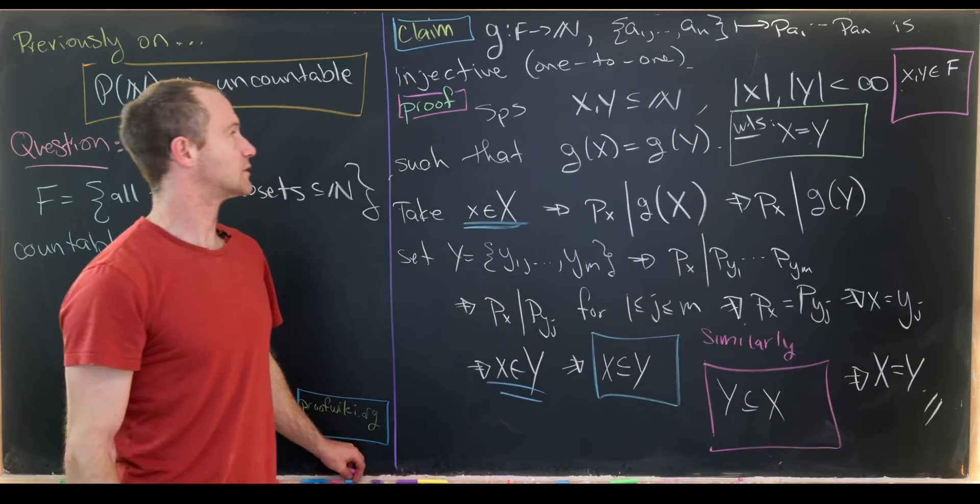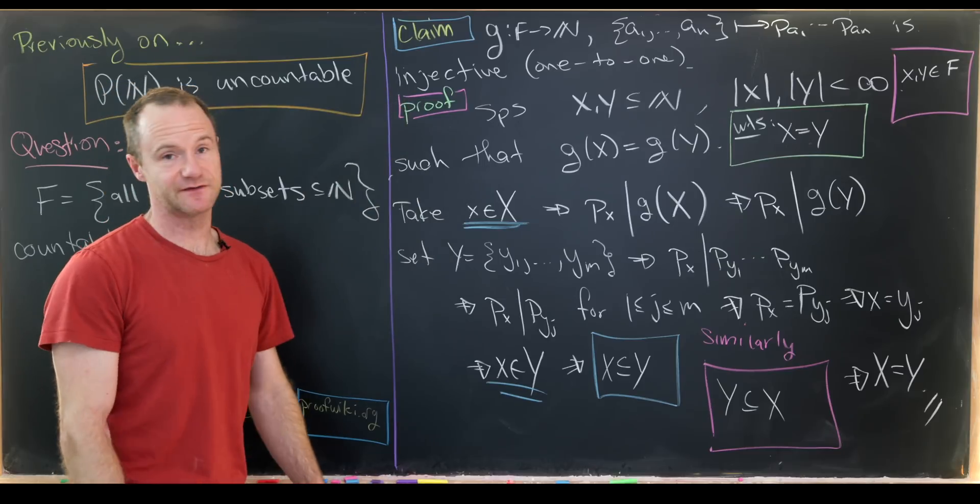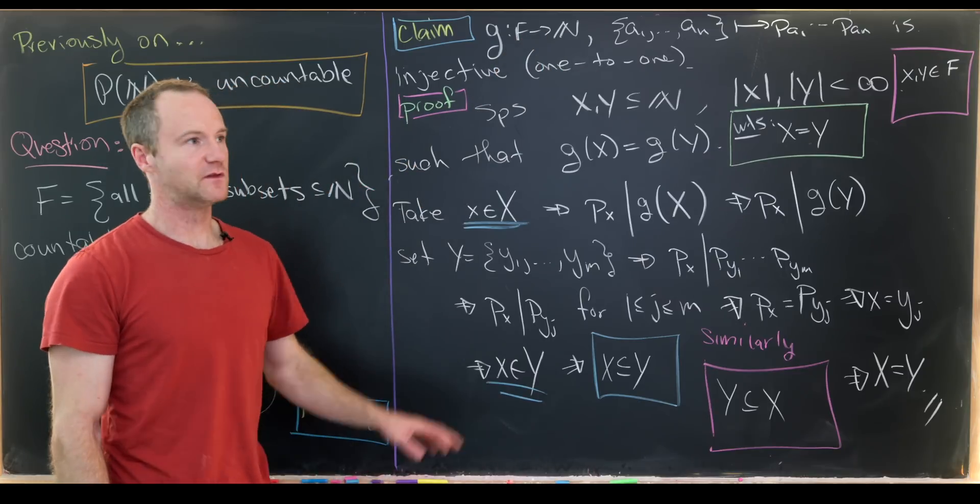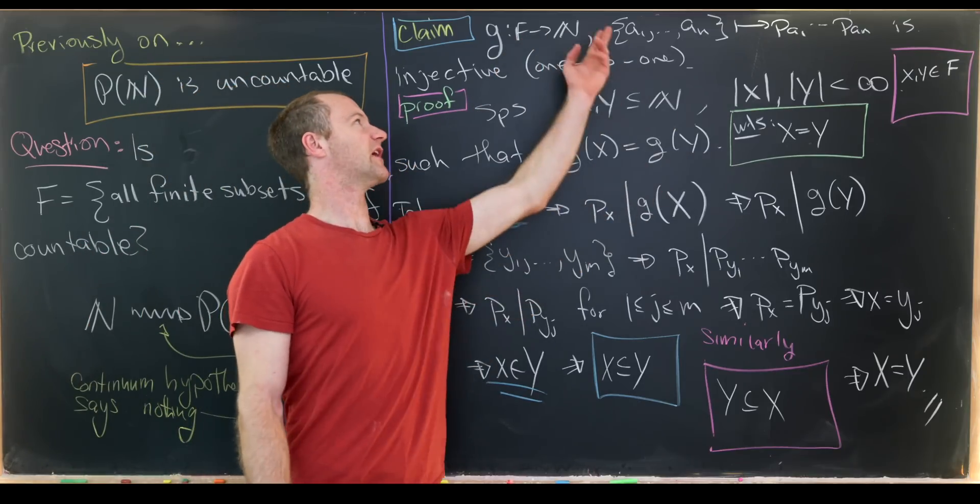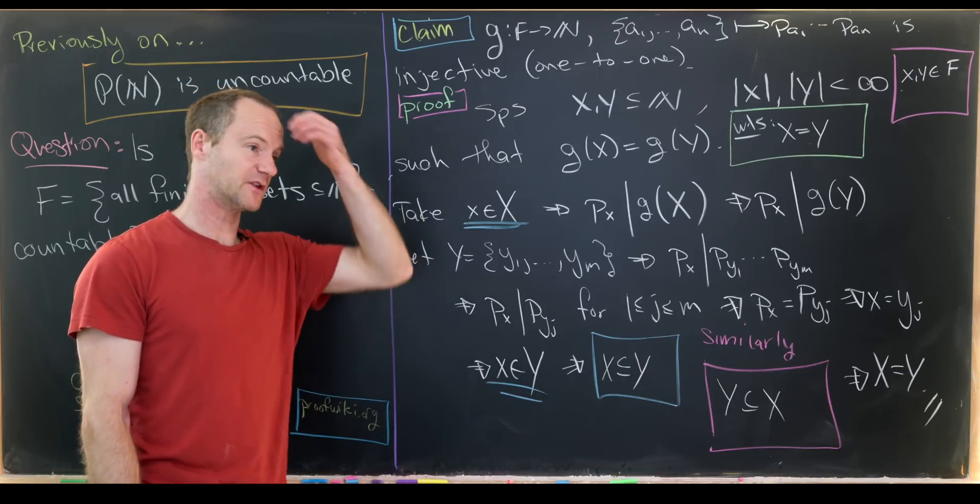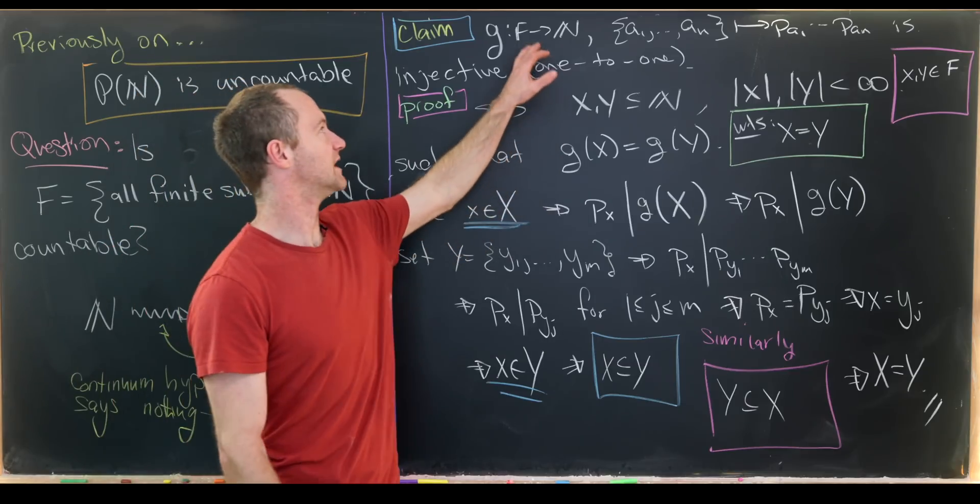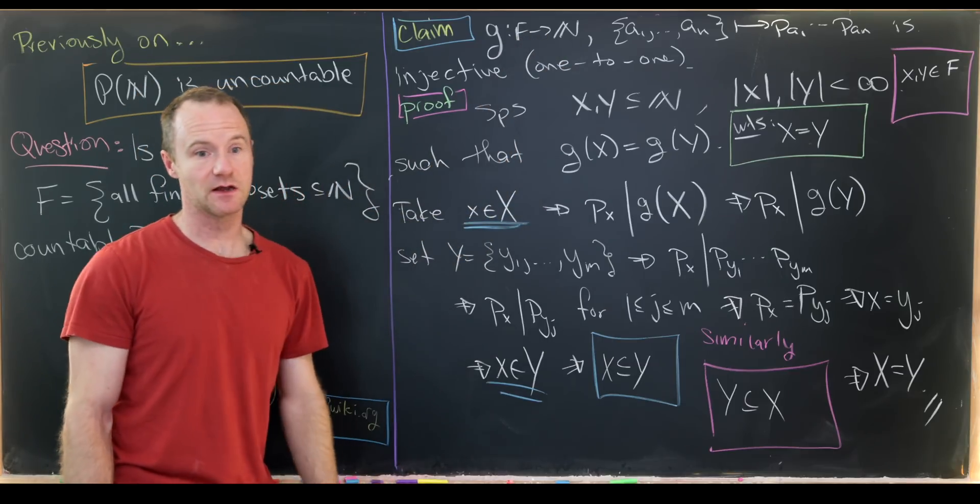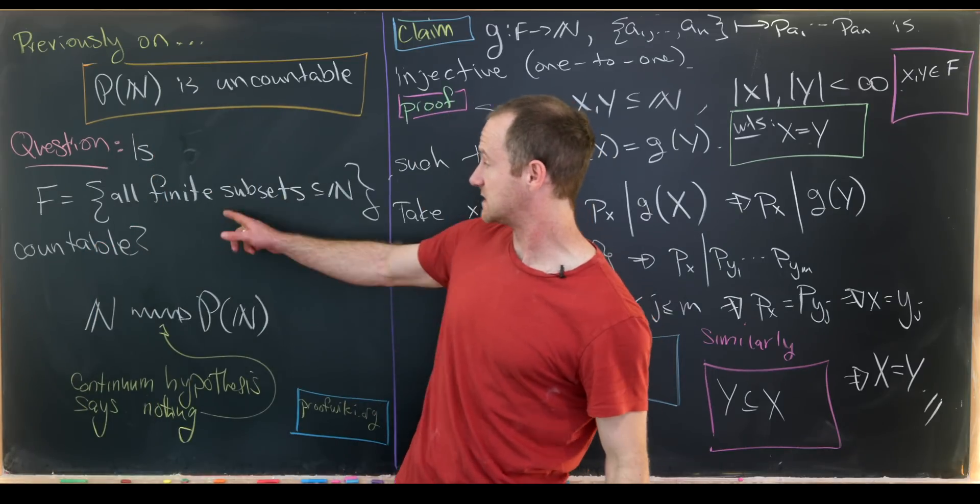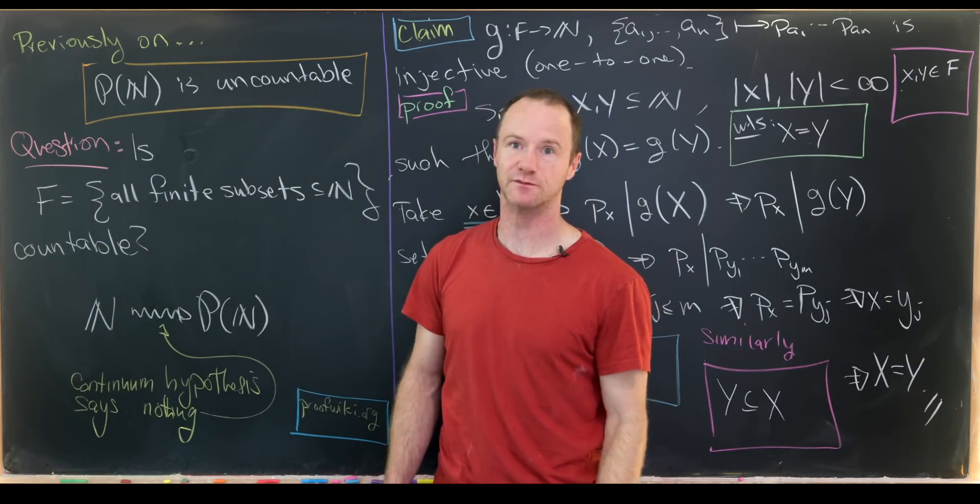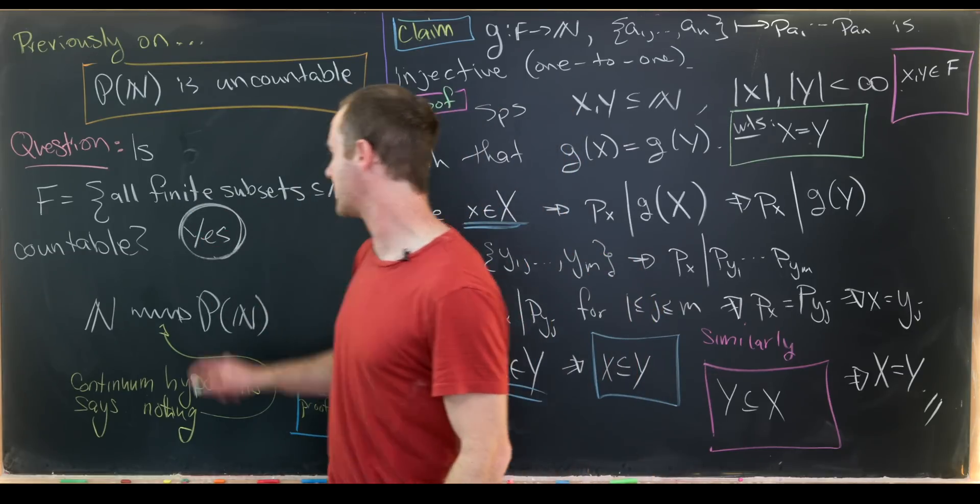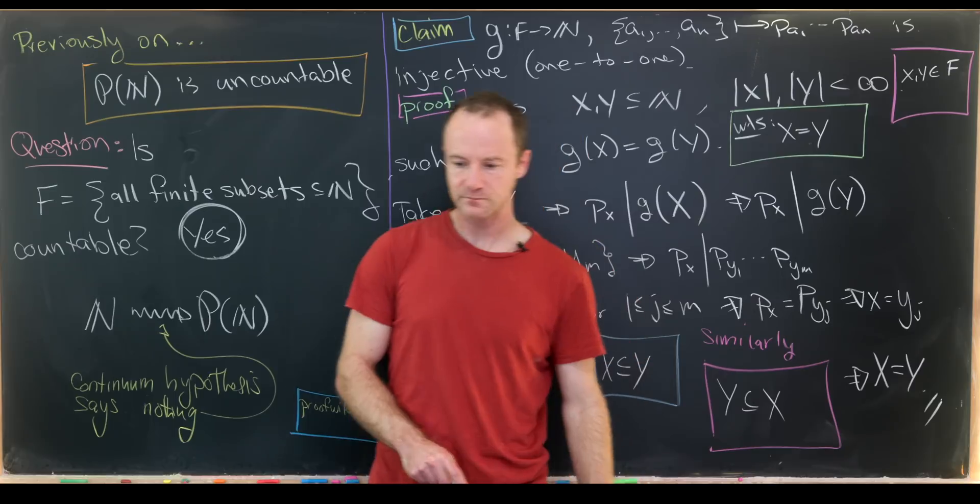If X = Y, then we have an injective function - an injection from F to N. Earlier in the video, we found an injection from N to F. By the Schroeder-Bernstein theorem, F and N are equinumerous. That means this set is countable, because being equinumerous with the natural numbers is the definition of countability.